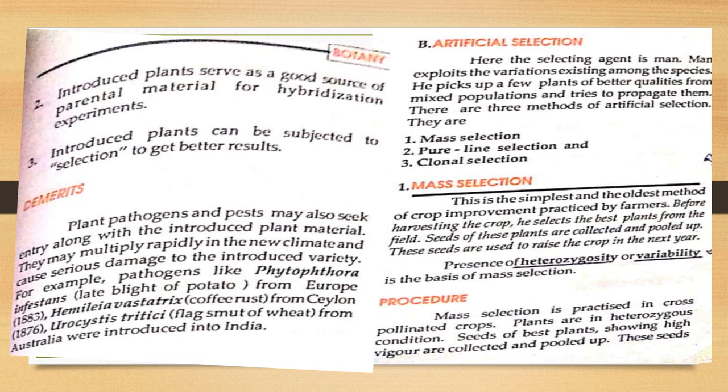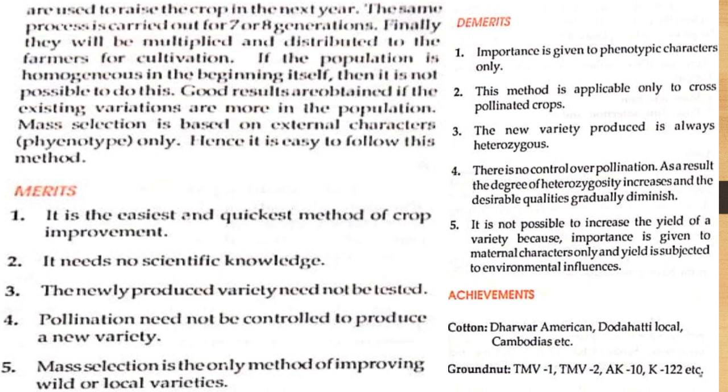Mass selection is the simplest and oldest method of crop improvement. Before harvesting the crop, the farmer selects the best plants from the field; seeds of these plants are collected and pooled. These seeds are used to raise the crop in the next year. The presence of heterozygosity or variability is the basis of mass selection. It is practiced in cross-pollinated crops where plants are in a heterozygous condition; seeds of the best plants showing high vigor are collected and pooled.